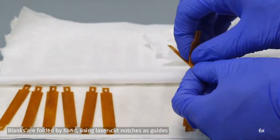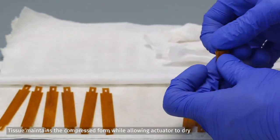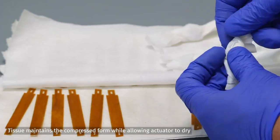Each blank is folded into shape using the laser cut notches as guides. The folded actuator is wrapped in tissue and allowed to dry.